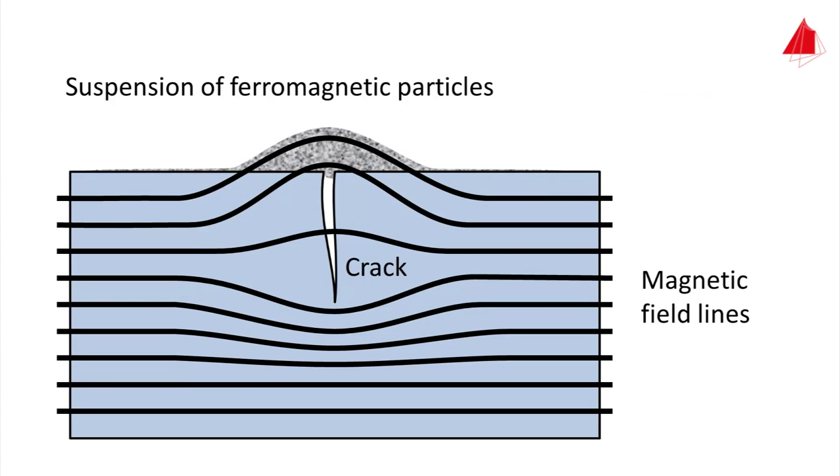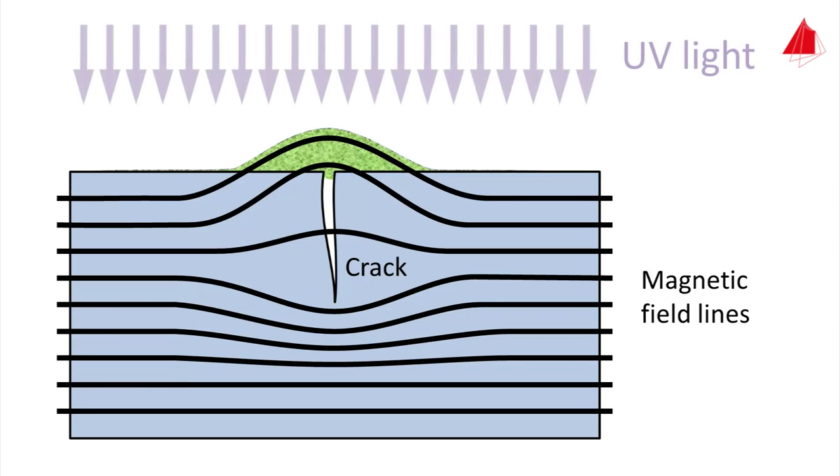Thus indicating the place of the defect. The method works best using a pigment which covers the magnetic particles and shows fluorescence under ultraviolet light.